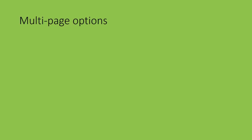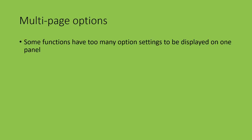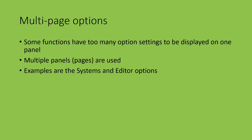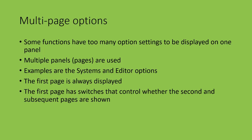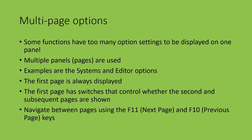The third topic is multi-page options. Some functions have too many settings to be conveniently displayed on one panel. ZDataTools handles this by splitting the settings across multiple pages and providing a simple method for moving between pages. Examples of multi-page options are the systems and editor options. The first page of a multi-page option is always displayed first when the option is selected. The first page has switches that control whether the second and subsequent pages are shown. You move between the various pages using the F11 or Next Page and F10 or Previous Page keys.